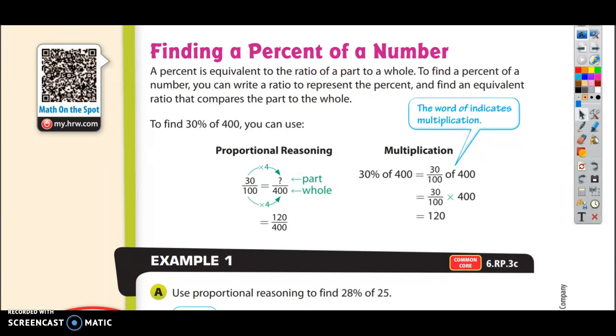To find 30% of 400 you can use proportional reasoning. So this is the problem we had on the previous page. 30% means 30 hundredths. And then we knew that it was out of 400 gloves. So what do you notice is happening here is that we're going to multiply by 4. If you do 100 times 4 you get 400. And you have to do that with the percent too. So you do times 4, we already knew this, you get 120 right here. 120 left handed gloves.